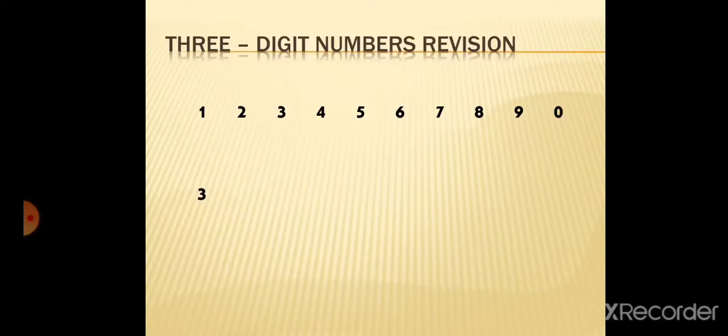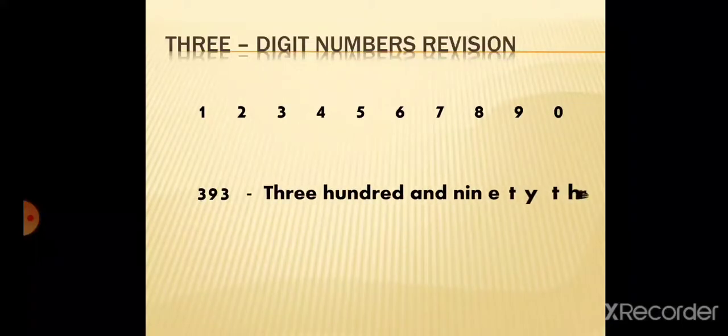Three in the hundreds place — that is three hundred. Nine in the tens place — that is ninety. And three in the units place. So how will you read this number? This number will be read as three hundred and ninety-three.